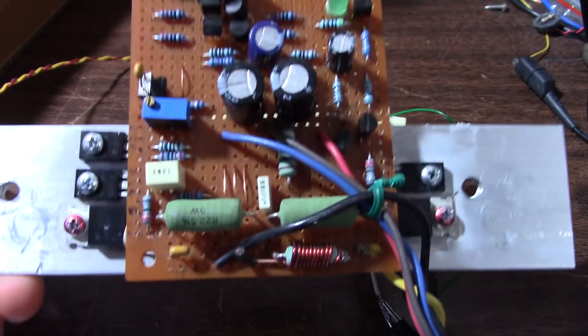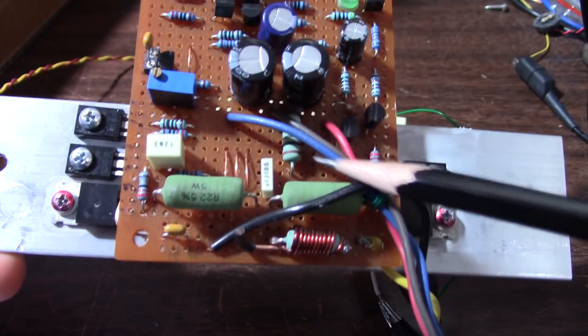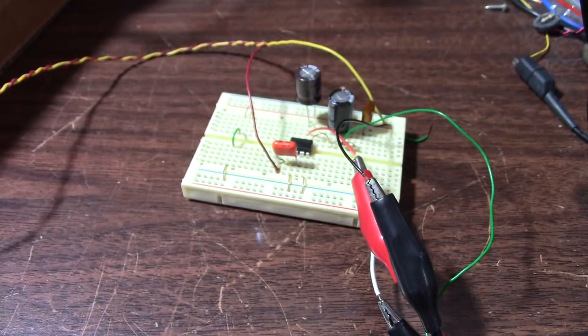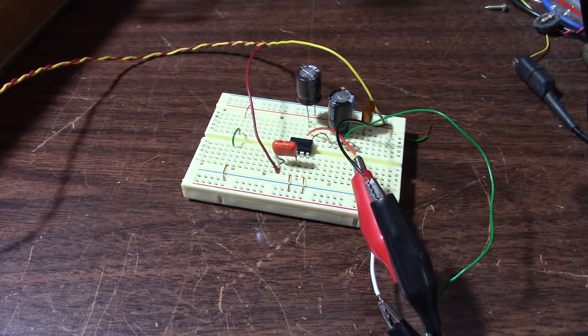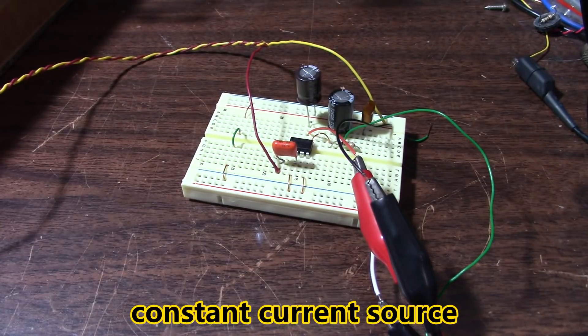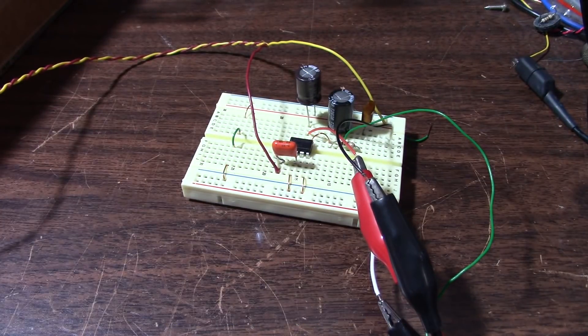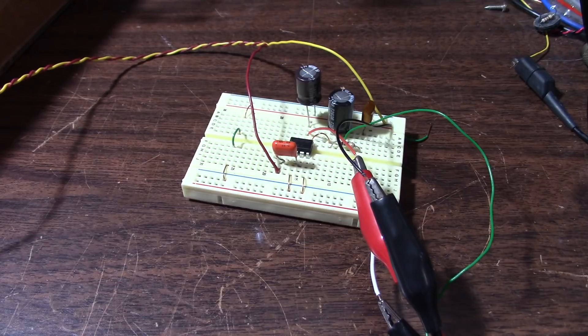These amps are made of smaller building blocks. One of the building blocks was a current source, and I was running some tests on it, putting square waves on the current source to see how it behaves, see if it was stable or not.